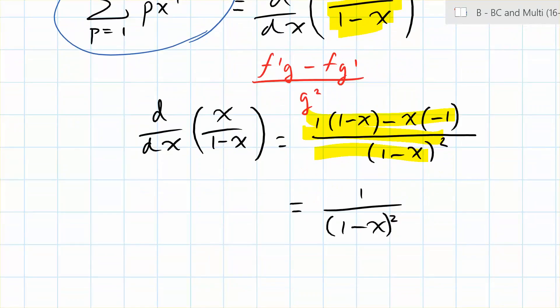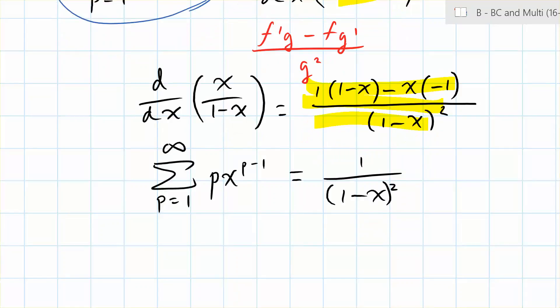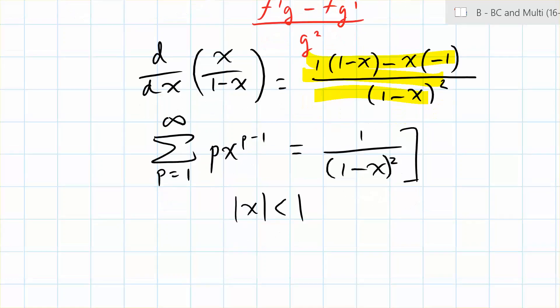Finally, we can set that equal to our original summation. We do get the answer, but we have to make sure that this is all between the absolute value of x is less than 1 because this right here has a domain restriction.